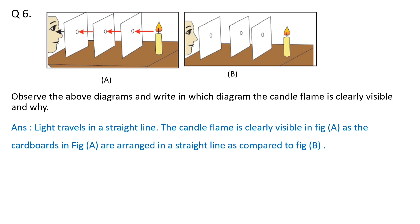Last question: Observe the above diagrams and write in which diagram the candle flame is clearly visible and why. Answer: Light travels in a straight line. The candle flame is clearly visible in figure A.